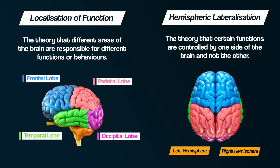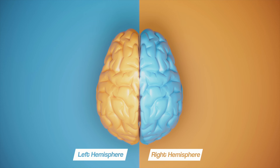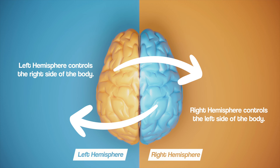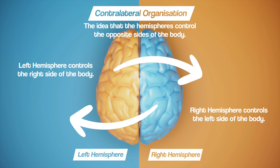In the previous video we talked about localisation of functions, and we need to now distinguish between that and lateralisation. A mental process can be localised in the brain — i.e., its function tends to be in a specific location — but it does not necessarily have to be in only one side of the brain, which would be lateralised. The two halves of our brain have specific processes and behaviours they control too.